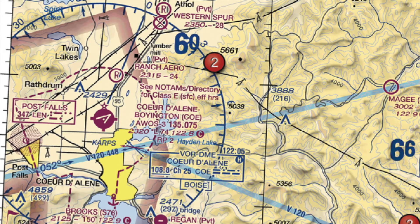So we have Coeur d'Alene Boyington, which is the airport name, airport identifier COE, and an AWOS frequency of 135.075. Remember, anytime you see AWOS, ATIS, or ASOS, it's referring to a weather frequency — so whatever frequency comes after that is going to be weather, not CTAF. That was actually one of our answer choices, and we can automatically eliminate it because it's weather-related. Next up we have the field elevation, the star with the letter L meaning lighting limitations exist, and the longest runway length of 7,400 feet — none of which are important for this question.